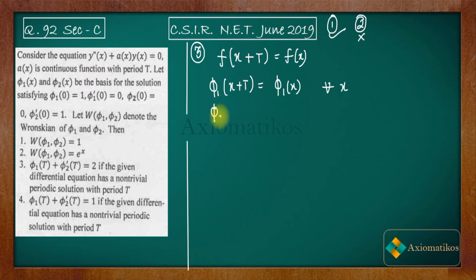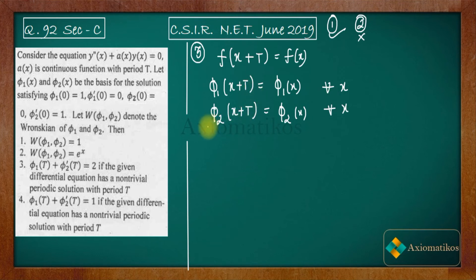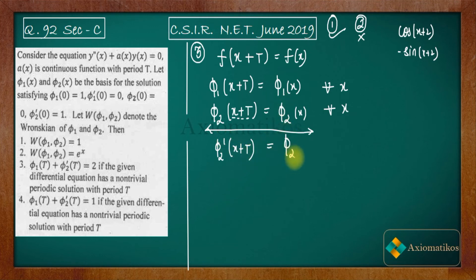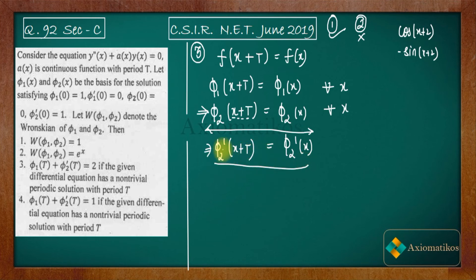Similarly, φ₂(x + t) = φ₂(x) for all x. If we differentiate this equation, we get φ₂'(x + t) = φ₂'(x). This means if a function φ₂ is periodic with period t, its derivative is also periodic with period t. So φ₂' is also periodic.